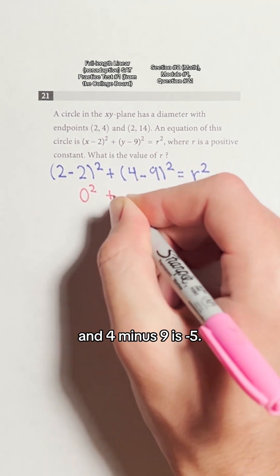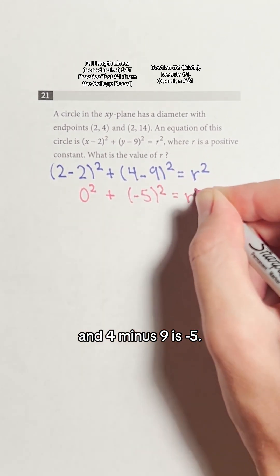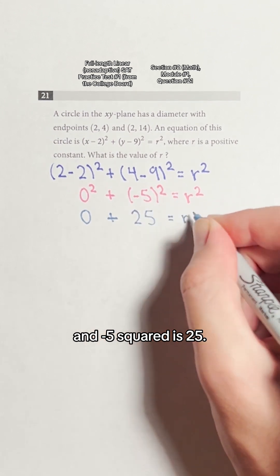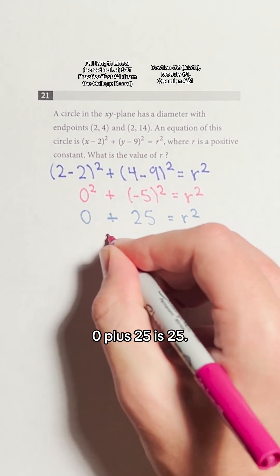2 minus 2 is 0 and 4 minus 9 is negative 5. 0 squared is 0 and negative 5 squared is 25. 0 plus 25 is 25.